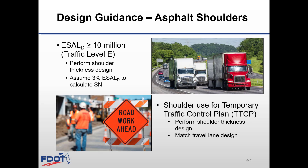On higher volume roadways, a shoulder thickness design should be performed using 3% of the design ESAL to calculate the required structural number. The 3% is an estimate of the number of trucks that will be riding or parking on the shoulder over the design life of the pavement. This was covered in more detail under Flexible Pavement Design Training Module 7, and can also be found under the Flexible Pavement Design Manual, Chapter 8.